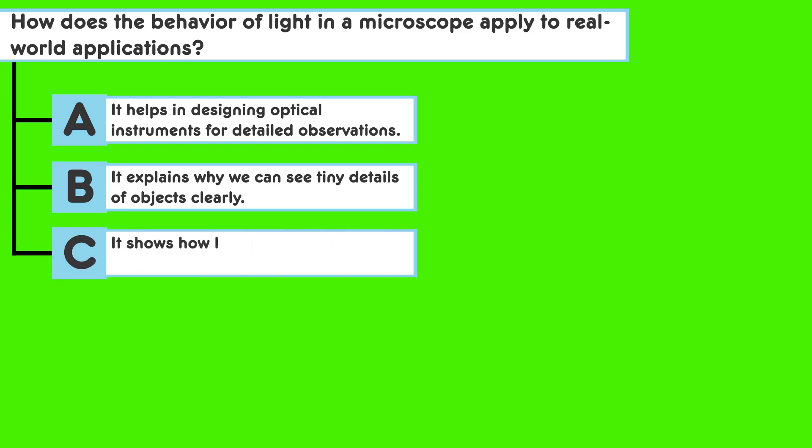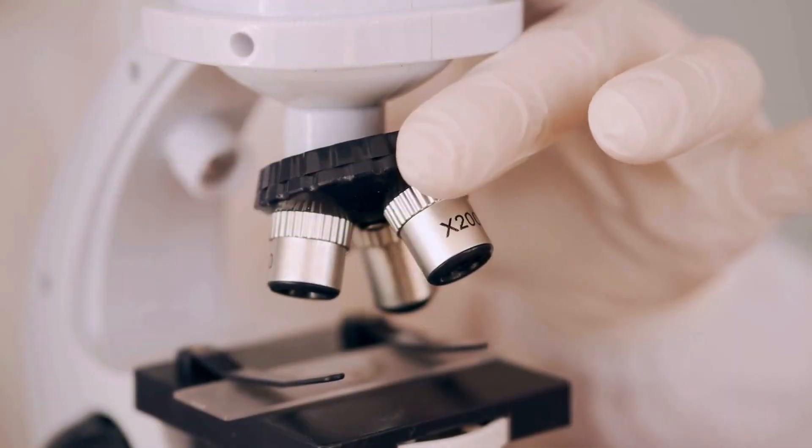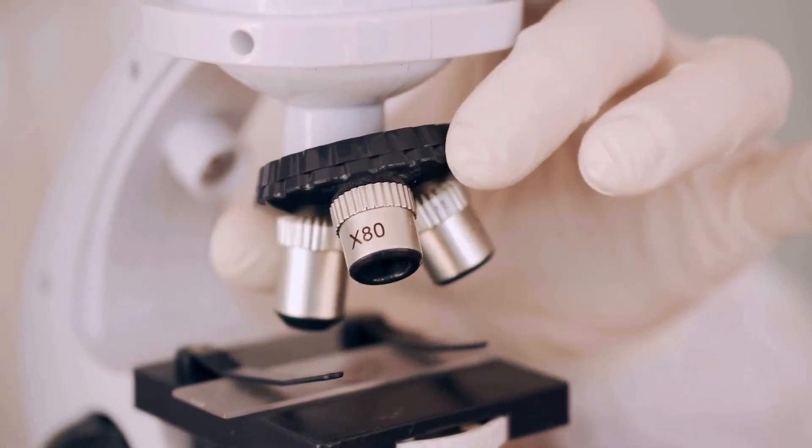Answer choice C: It shows how light can be used to focus on different depths. Quick tip. Consider how adjusting the focus of a microscope changes the depth of field we can observe.